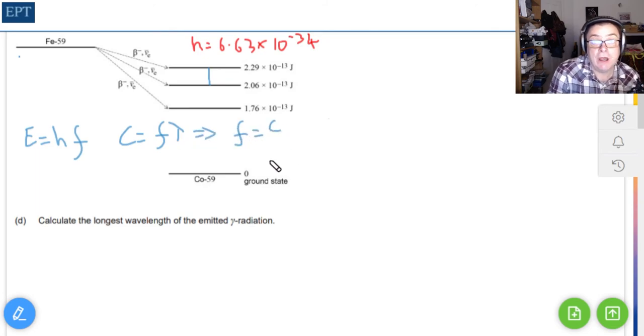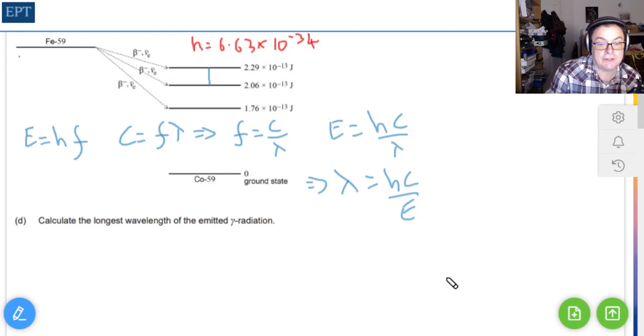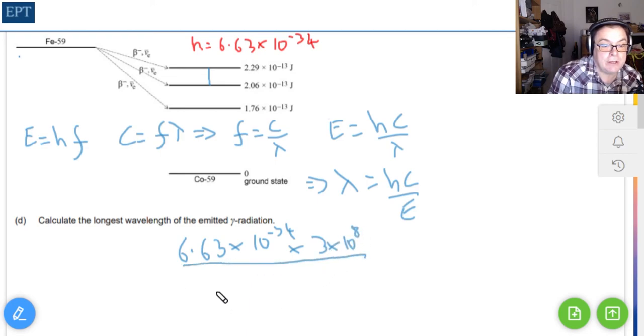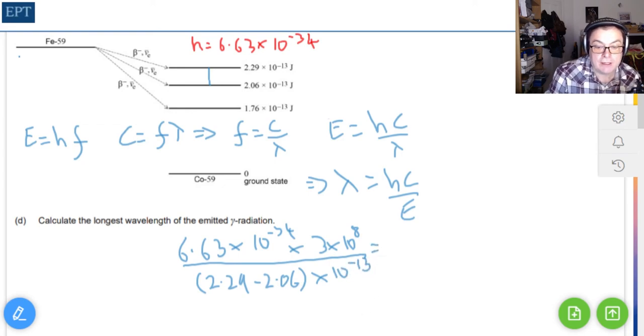That implies that frequency is c over lambda. Substituting back into the first formula, the energy is equal to Planck's constant times c over lambda. Ultimately, we're after lambda, so lambda equals h c over E. Now it's just a question of plugging in the numbers: 6.63 times 10 to the minus 34 times 3 times 10 to the 8, all divided by 2.29 minus 2.06, all times 10 to the minus 13. When you work that out, you get 8.6 times 10 to the minus 12 meters.